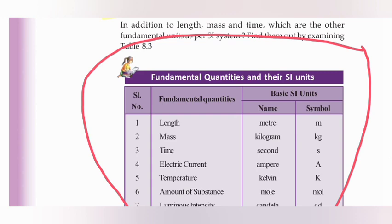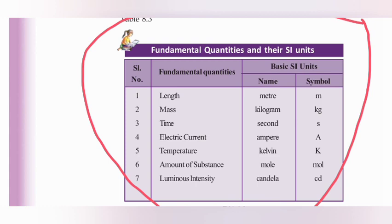The length unit is meter and symbol is m. This symbol is very important. The electric current unit is Ampere and that symbol is capital A. Temperature unit is Kelvin — in the SI system the basic SI unit for temperature is Kelvin, symbol capital K.